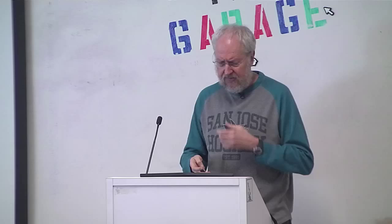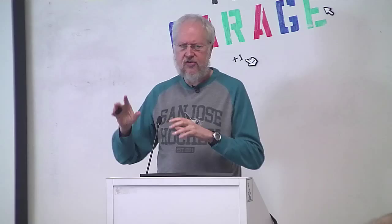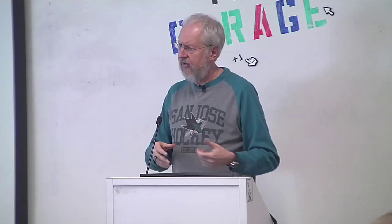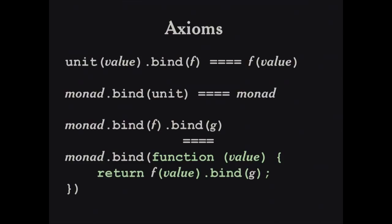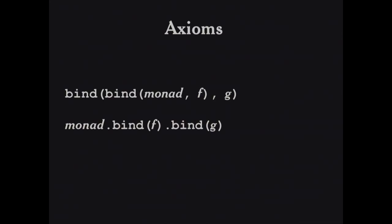Let's look at the axioms again using the methodical notation. I think it actually makes more sense in this notation — it's easier to see the relationship between unit and bind. Even better is what happens in composition: we have a monad, we call bind, it returns another monad, and we can call bind again. This is a much easier composition pattern than nested bind calls, because with nesting you have to read expressions from the inside out. In the methodical form we can read left to right, just tacking things on as the expression gets longer and more complex.